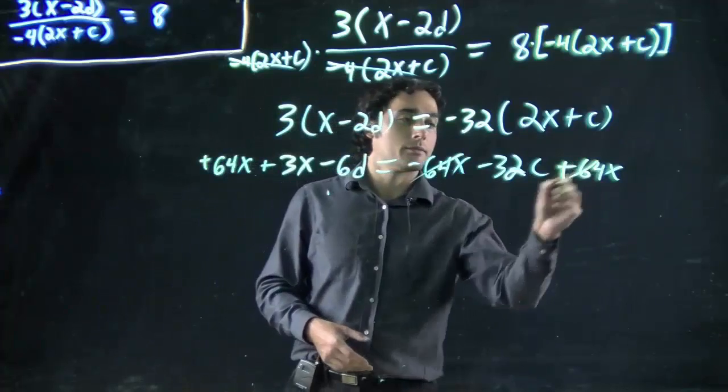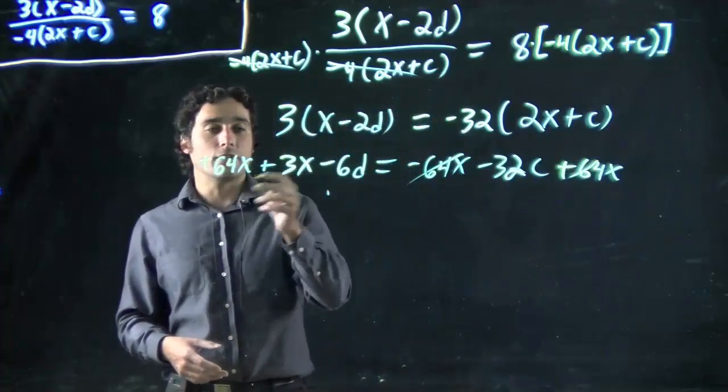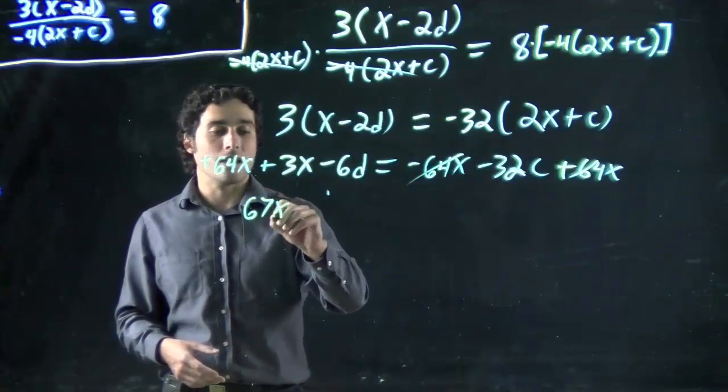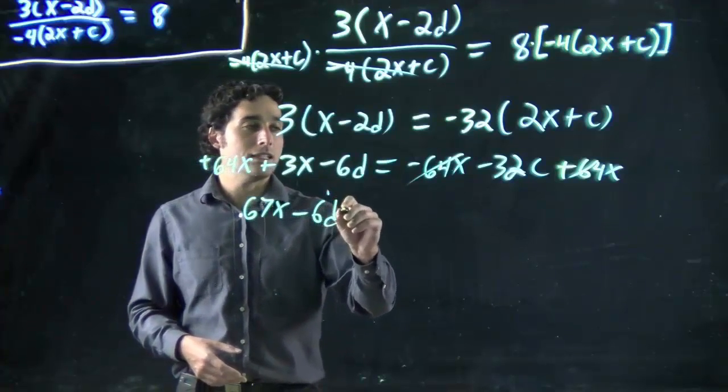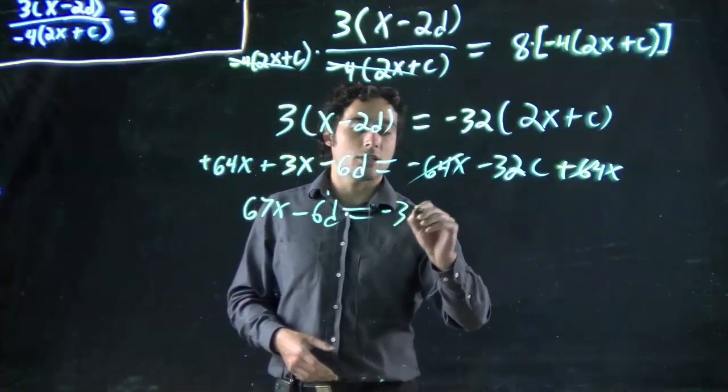So, it cancels. And I get 64x plus 3x, or in other words, 67x minus 6d equals minus 32c.